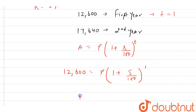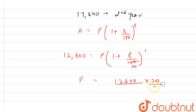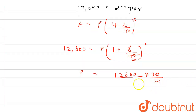We can write P as equal to 12,600 multiplied by 20 divided by 21, since 5 cancels with 100 to give 1/20, making the bracket (1 + 1/20) = 21/20. Solving this, P comes out to be Rs 12,000.